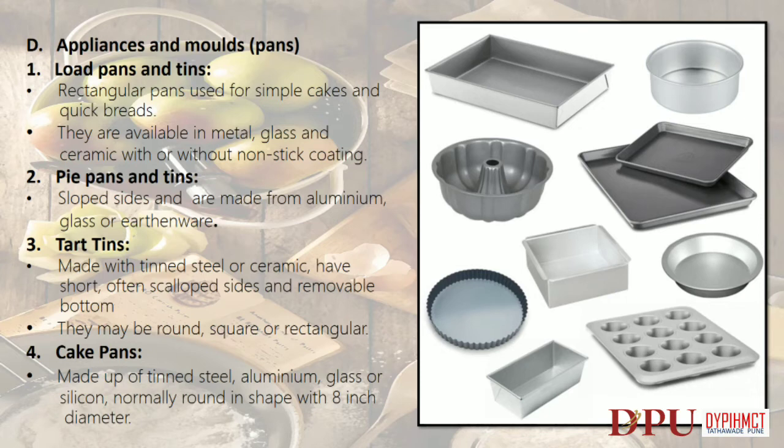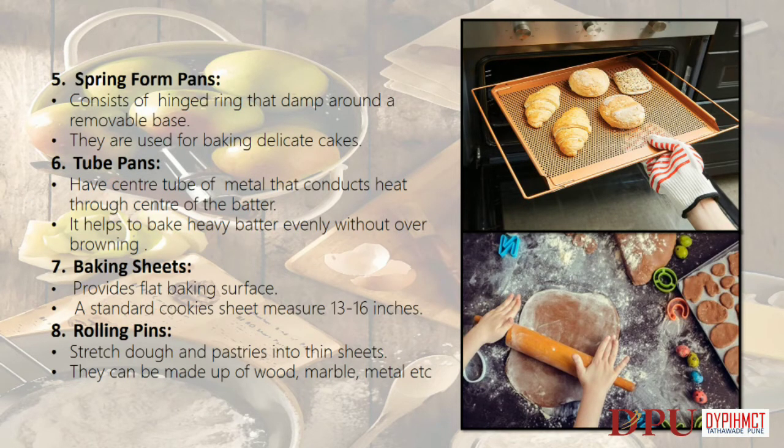Cake pans: made of tinned steel, aluminium, glass or silicone, normally round in shape with 8-inch diameter. Springform pans: consist of a hinged ring that clamps around a removable base; used for baking delicate cakes. Tube pans: have a center tube of metal that conducts heat through the center of the batter, helping to bake heavy batter evenly without over-browning. Baking sheets: provide a flat baking surface; a standard cookie sheet measures 13 to 16 inches.